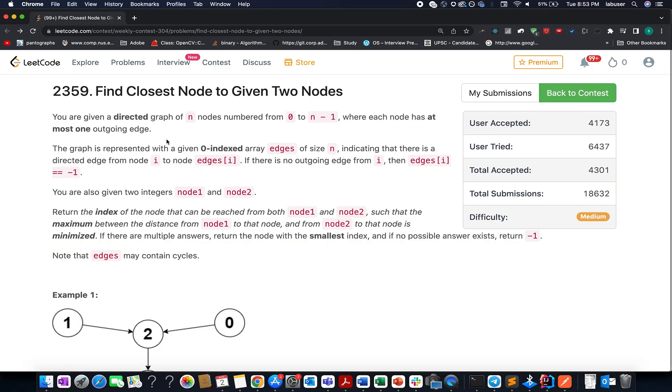Hello, everyone. Welcome to Coding Decoded. My name is Sunchit Dudeja. I'm working as a technical architect at Adobe. And here I present the third question of the weekly contest: Find Closest Nodes to Given Two Nodes.